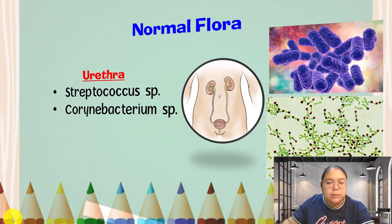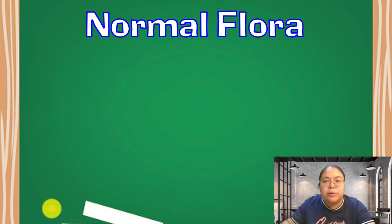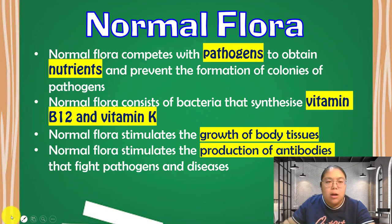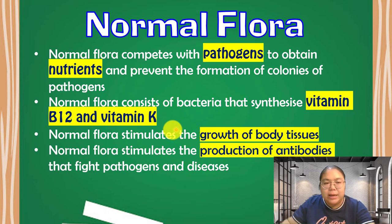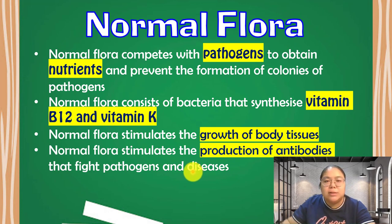Now let's see the definition of normal flora. Normal flora competes with pathogens to obtain nutrients and prevents the formation of colonies of pathogens. Normal flora also consists of bacteria that synthesize Vitamin B12 and Vitamin K. Normal flora stimulates the growth of body tissue and the production of antibodies to fight pathogens and diseases. So these are good microorganisms that stay in your body.